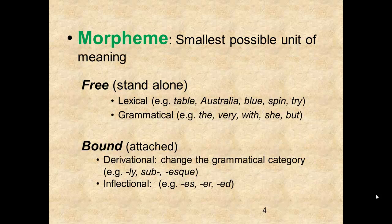Bound morphemes, on the other hand, are those that cannot stand alone and must be attached to some other morpheme. Most of the base forms that you have been learning in this course are examples of bound morphemes. Bound morphemes can be further categorized as either derivational or inflectional.